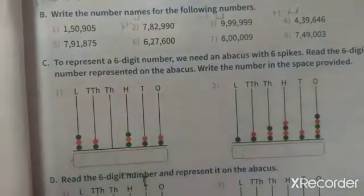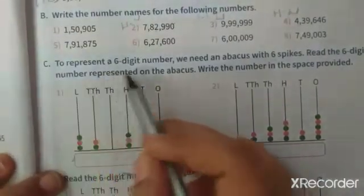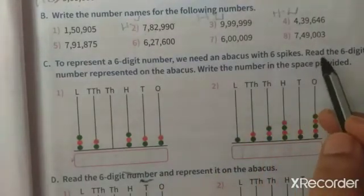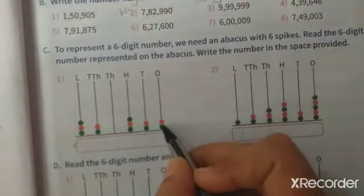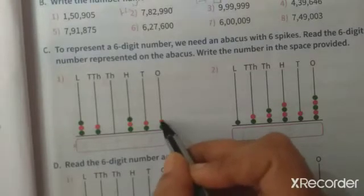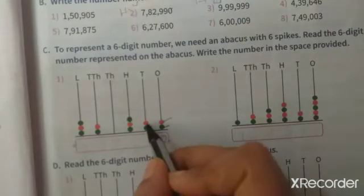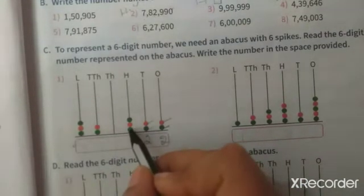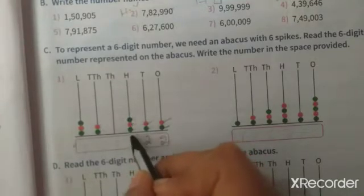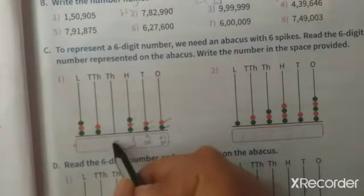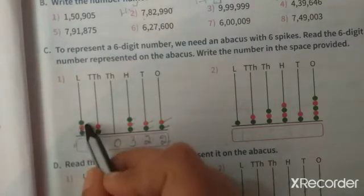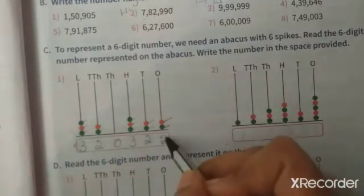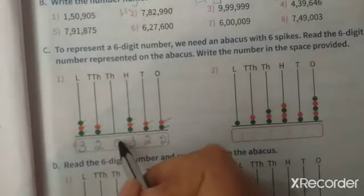Now in exercise 1.2, page number 5: to represent a six-digit number we need an abacus with six spikes. Read the six-digit numbers represented on the abacus and write the numbers in the space provided. Here the abacus is given, and we have to count and write. So here: ones place two, tens place two, hundreds place three, and then counting continues — thousands place zero, ten thousands place two, lakhs place three.